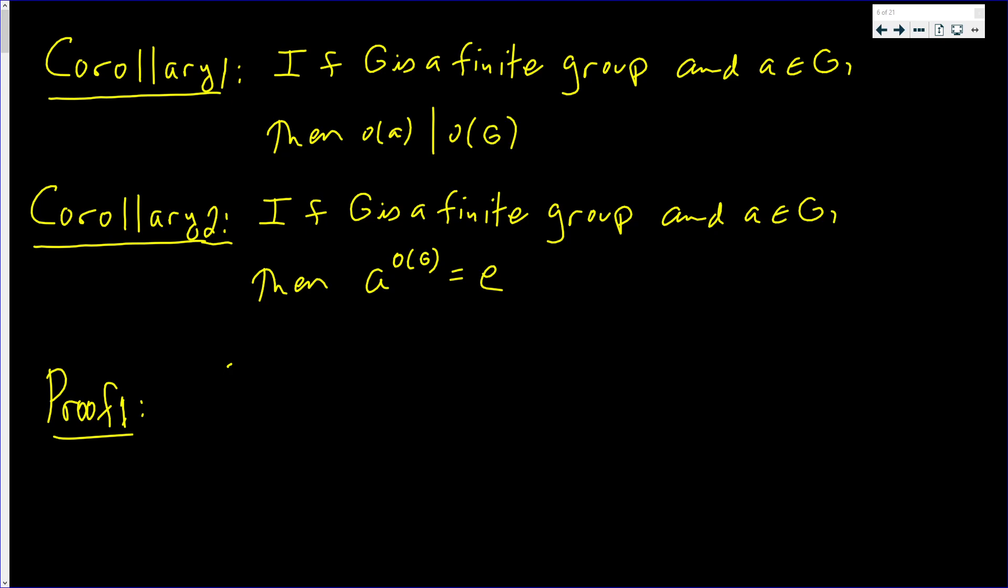The second corollary goes on to say that if G is a finite group and once again A is an arbitrary element in the group, then A raised to the order of the group will give you back E for any A in the group.